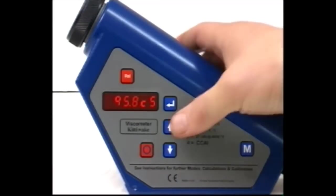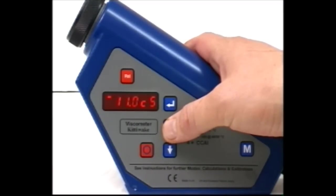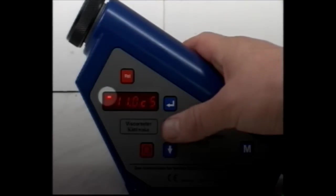Use the arrow keys again to get a display of centistokes at 100 degrees Celsius if required. This is indicated by the small dash on the display.